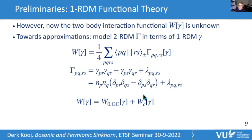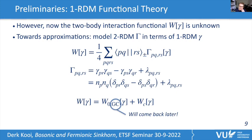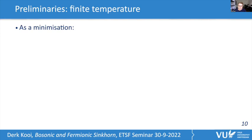Using this decomposition, the two-body interaction functional splits into two contributions: a non-interacting functional (labeled W⁰_GC for grand canonical, to be explained) and a correlation functional. I denote the first one with GC because it comes from the grand canonical ensemble, as I will return to later.